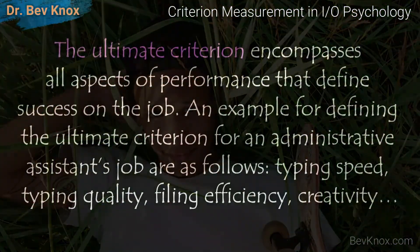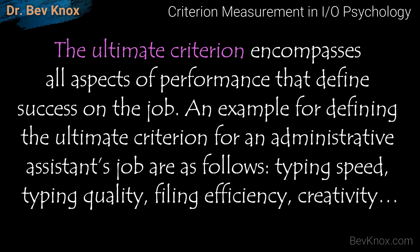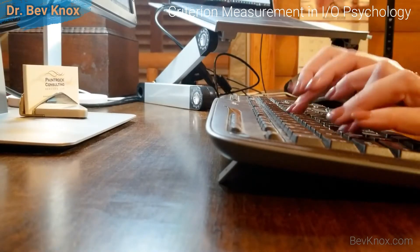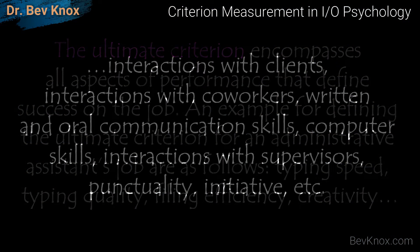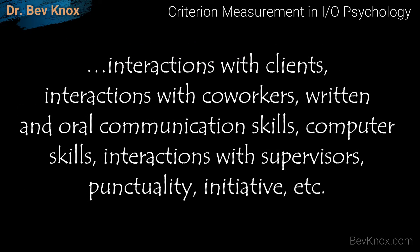Now, let's get back to criterion — the ultimate criterion. The ultimate criterion encompasses all aspects of performance that define success on the job. An example for defining the ultimate criterion for an administrative assistant's job includes: typing speed, typing quality, filing efficiency, creativity, interactions with clients, interactions with co-workers, written and oral communication skills, and computer skills.